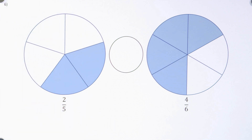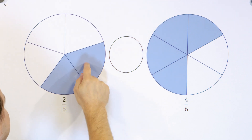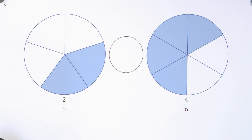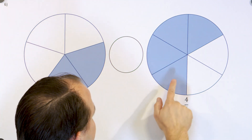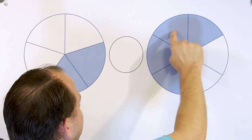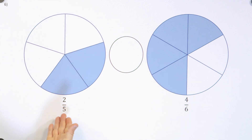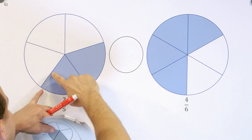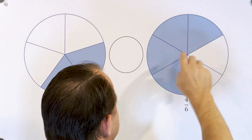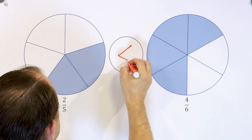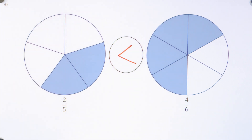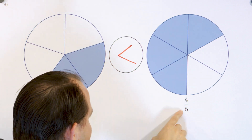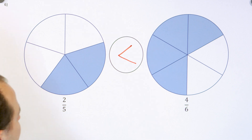Going back to circles — we have two fifths, two pieces out of five, compared to four sixths, four pieces out of six. I cannot tell by looking at these which one is bigger. But when you look at a drawing, you can see that two fifths is way less. Would you rather have this much or all of this? Clearly two fifths is the smaller fraction, so the arrow points to it, and we say two fifths is less than four sixths.